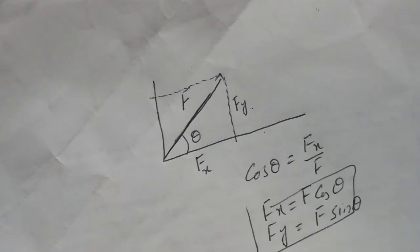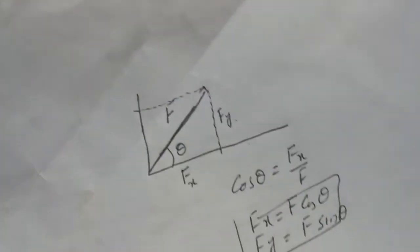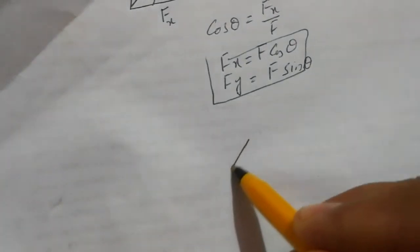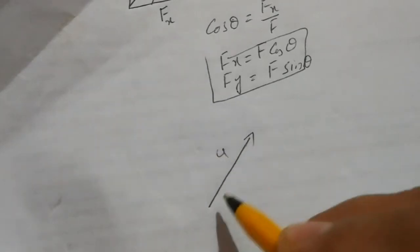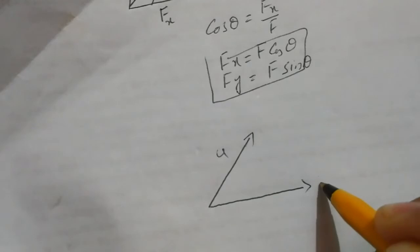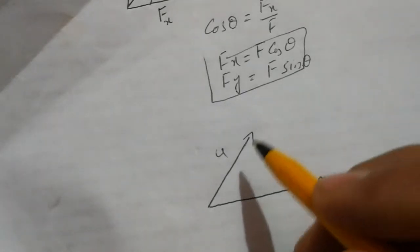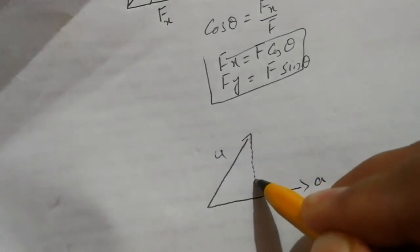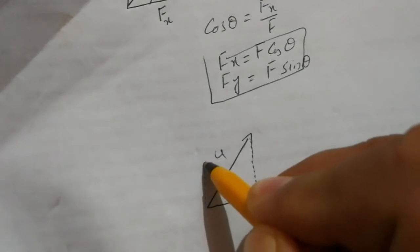Now in the projection theorem we want to do the same, but we decompose a vector u with respect to another vector a, where a is non-zero. In a similar fashion we draw a perpendicular and form a parallelogram, giving us two component vectors.